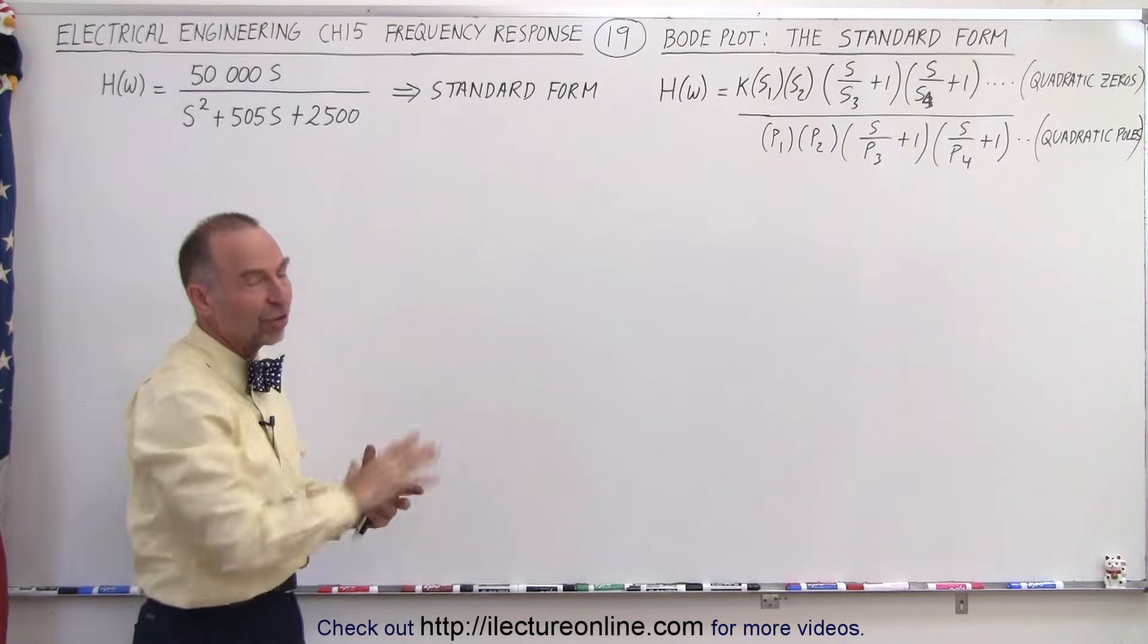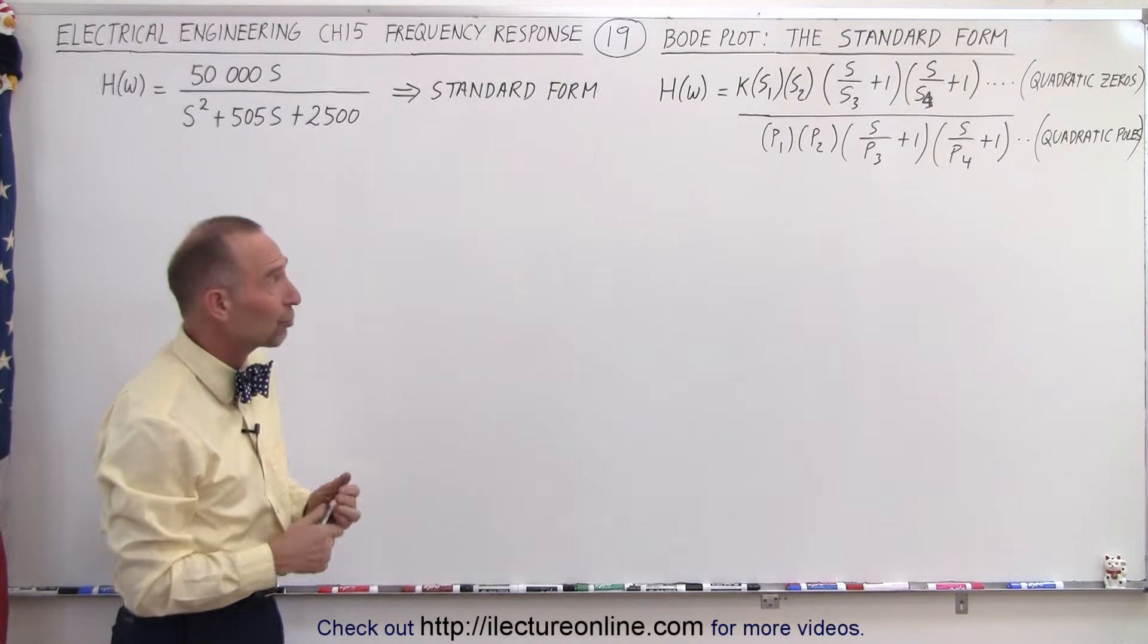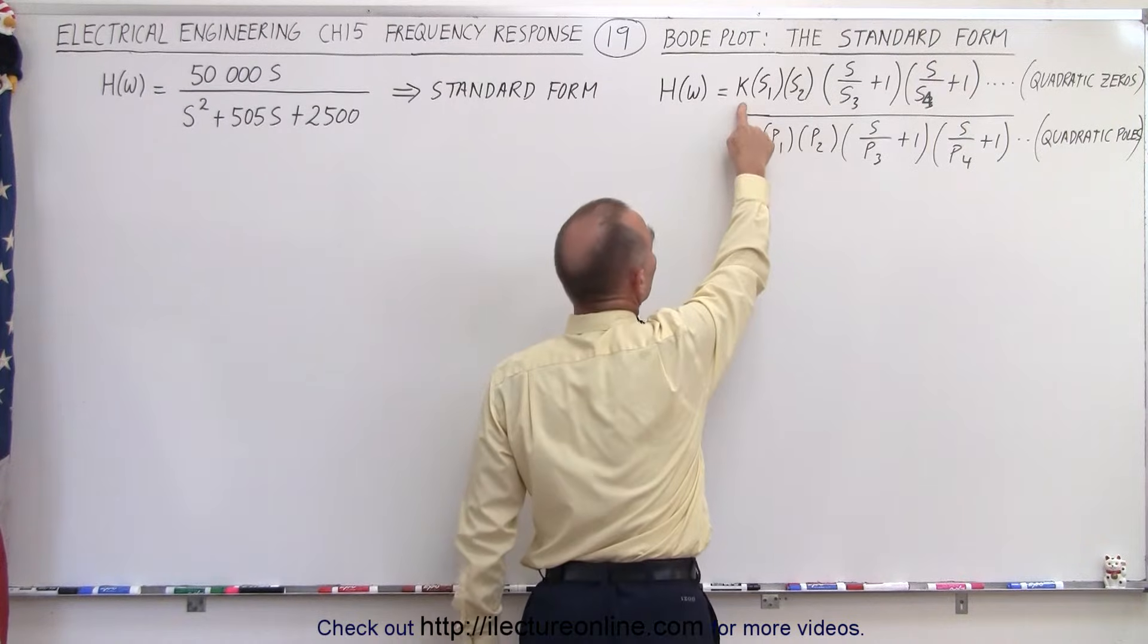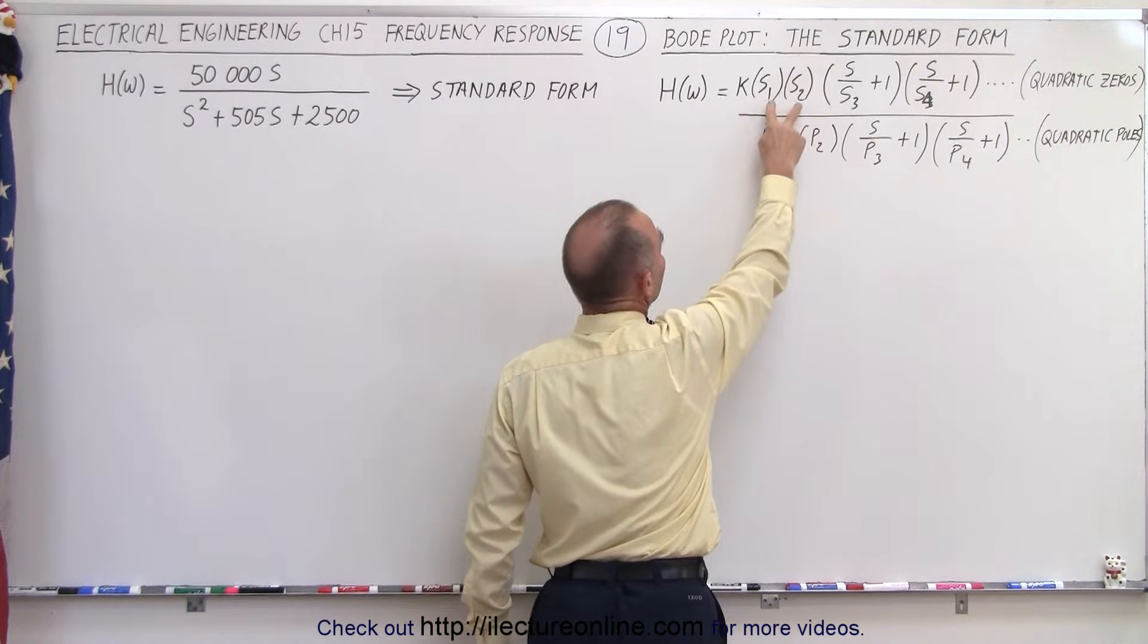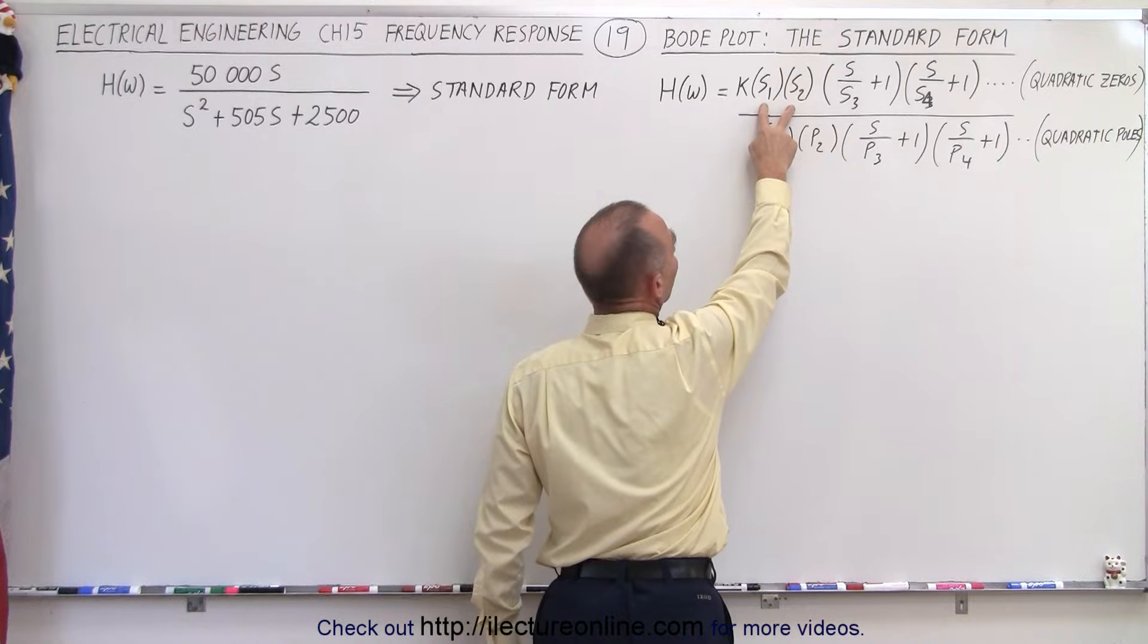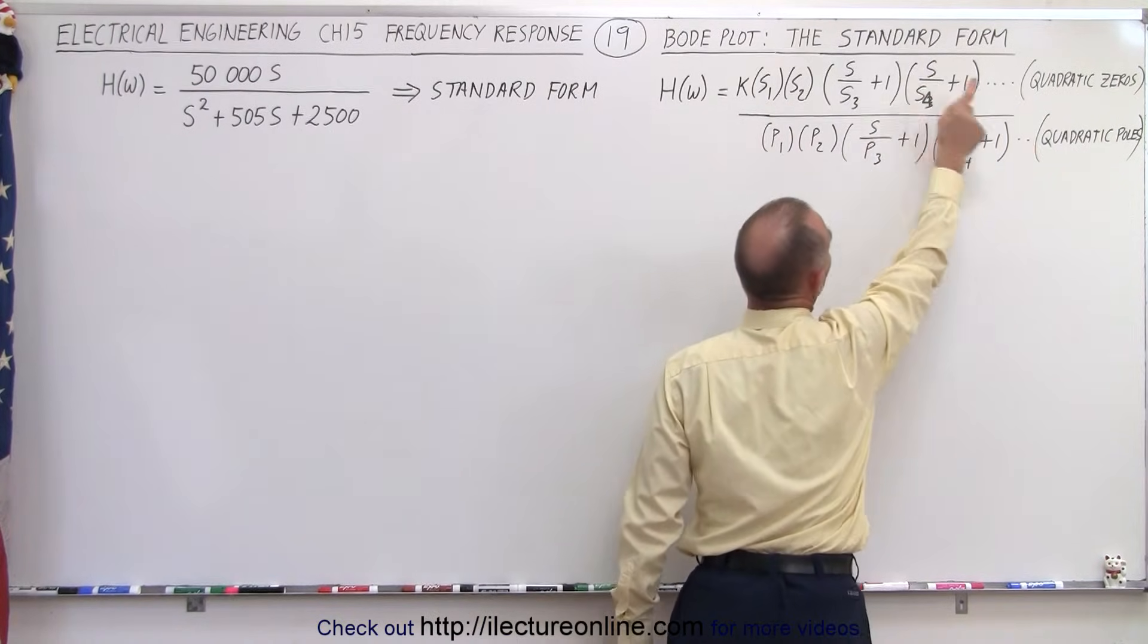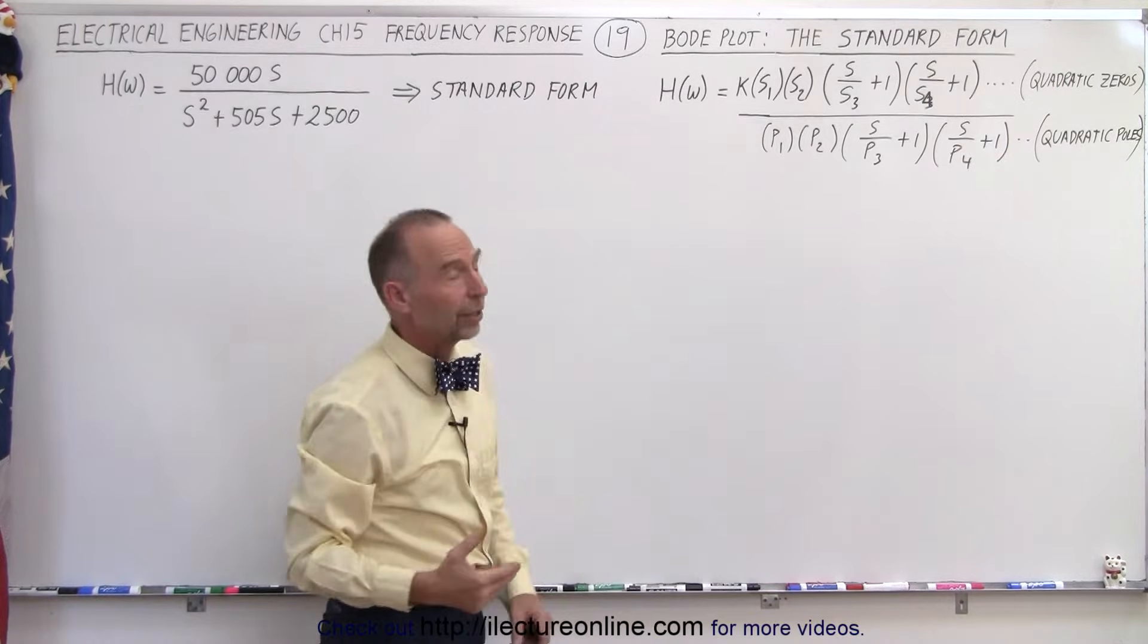We have a general representation of what standard form of the transfer function looks like. It will contain a constant in the numerator, it may contain zeros at the origin, it may contain simple zeros, and it may contain quadratic zeros in the numerator.